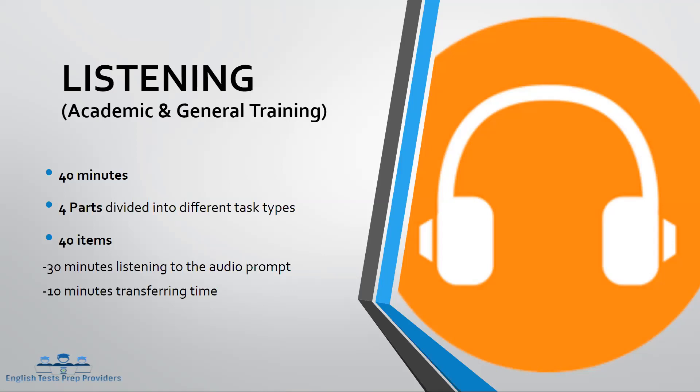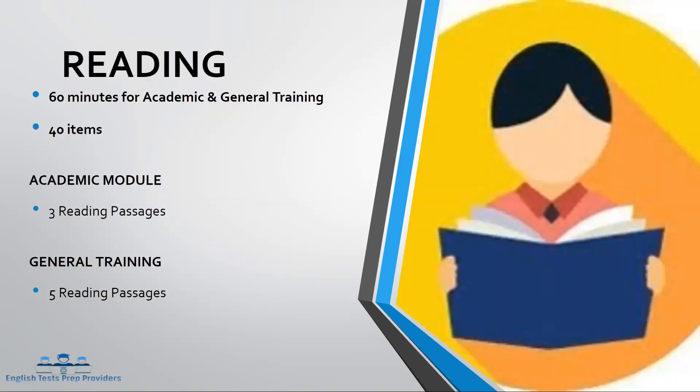We are going to make another video for the computer-delivered test. For the reading IELTS subtest, both academic and general training modules have 60 minutes and 40 items. But they differ in passages and sections. For the academic module, there are three reading passages of approximately 900 to 1,500 words per passage. General training, by contrast, has five sections, and reading passages are from business correspondence, advertisements, and content related to English in the workplace.